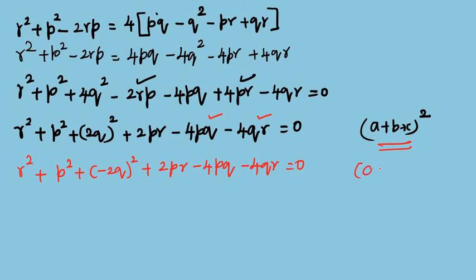Now, this is (a + b + c)² form. This is clear: (a + b - c)². So, (r + p - 2q)² = 0.